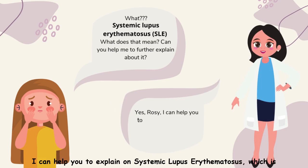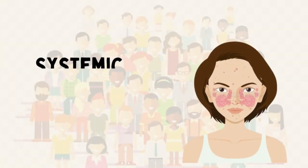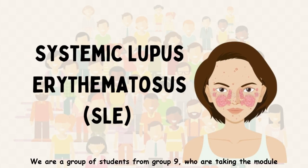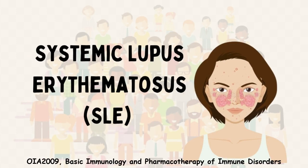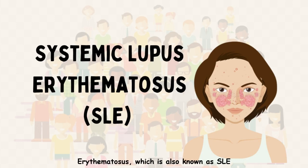Yes, Rosie. I can help you to explain systemic lupus erythematosus, which is also known as SLE. Don't worry. With that, we are a group of students from group 9 who are taking the module OIA2009 Basic Immunology and Pharmacotherapy of Immune Disorders, who would like to present on the disease called systemic lupus erythematosus, also known as SLE.